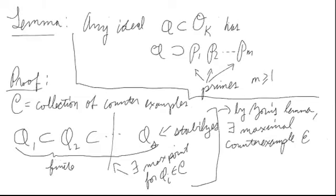Now let's look at a lemma: take any ideal in OK. We propose that it contains a product of primes. For the proof, we're going to use the Noetherian property of the ring of integers. Suppose we take the collection of all counterexamples — ideals that don't contain any product of primes.